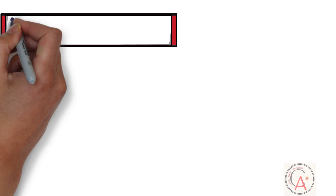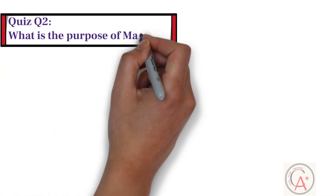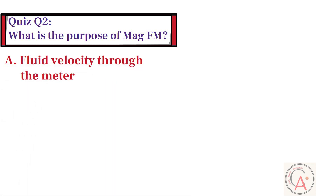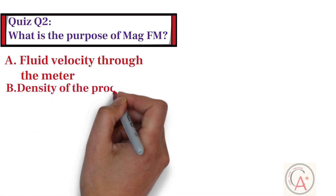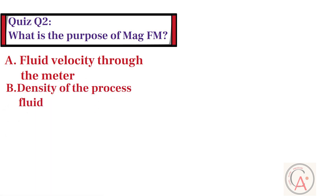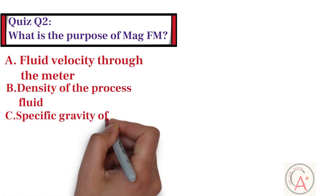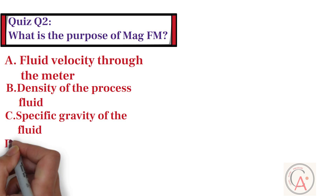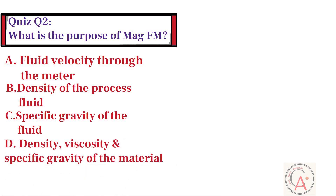The second question is: what is the purpose of a magnetic flow meter? Option A: it measures the fluid velocity through the meter. Option B: it measures the density of the process fluid. Option C: it measures the specific gravity of the fluid. And option D: it measures the density, viscosity, and specific gravity of the material.